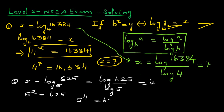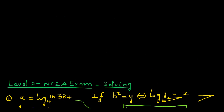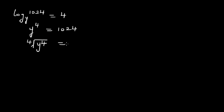Let me do one more example of log. The equation can be like this: log base y of 1024 is equal to 4. Using the same rule, you can't do log of 1024 divided by log of y here, so you have to write it in exponent form: y to the power of 4 is 1024. Now I have to find the fourth root — taking the fourth root of both sides gives y equals the fourth root of 1024.